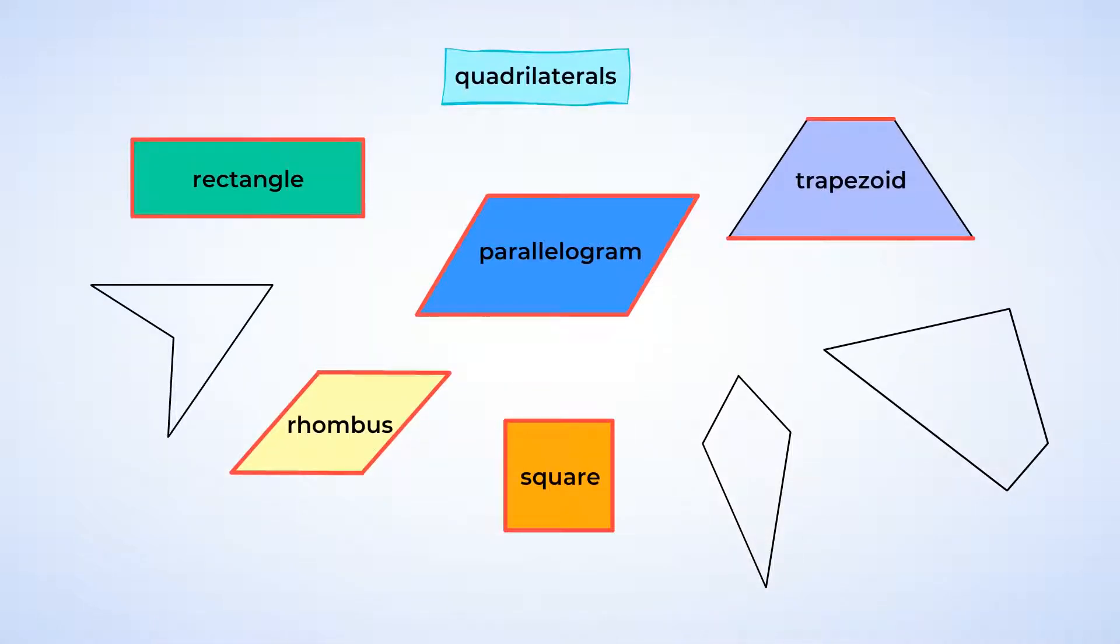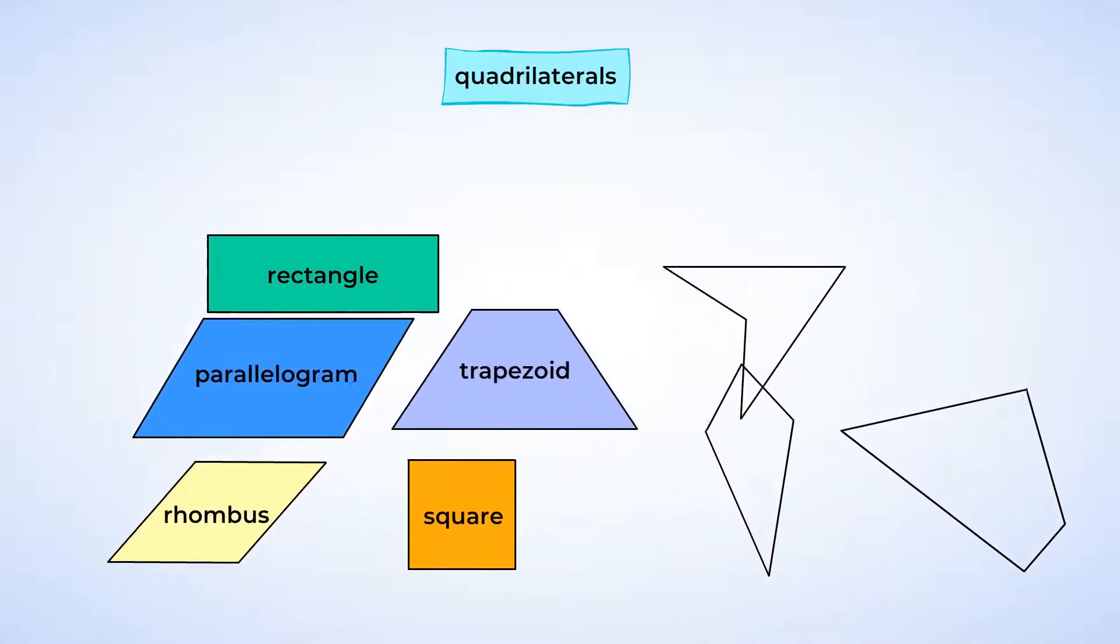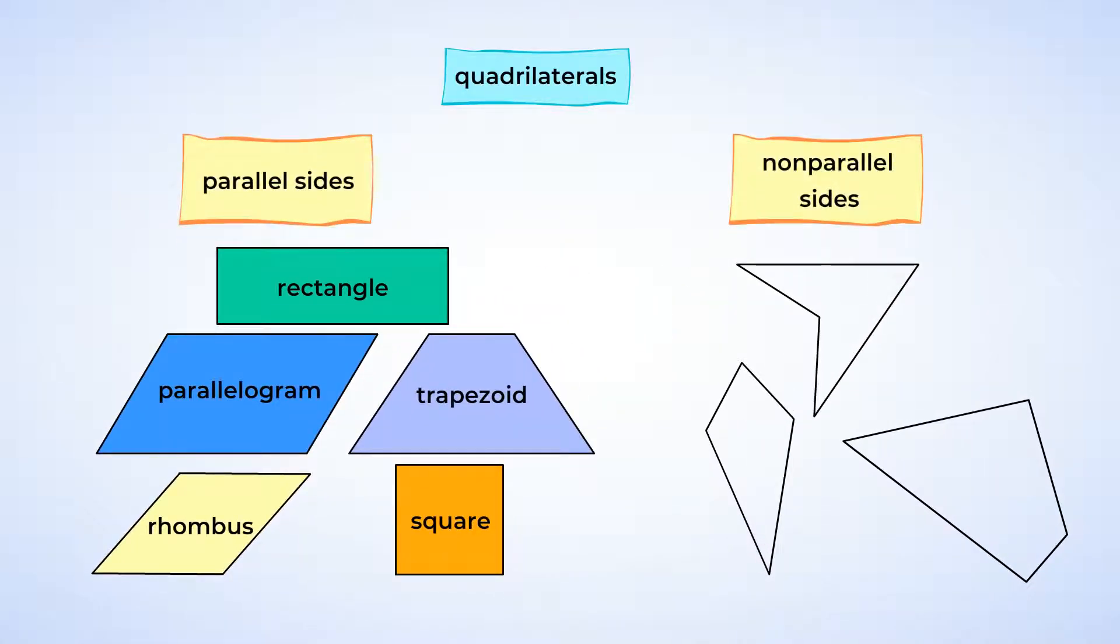We can generally split quadrilaterals into two groups: those that have parallel sides and those that do not. Notice that the shapes are still quadrilaterals since they all have four sides. We've just separated out more specific types of quadrilaterals. But let's keep going.